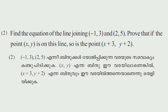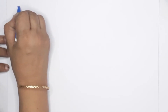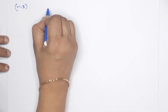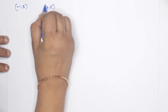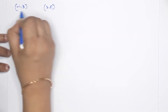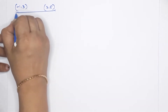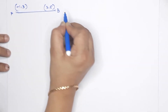Find the equation of the line joining negative 1, 3 and 2, 5. Prove that if the point (x, y) is on the line, so is the point (x+3, y+2). Negative 1, 3 is going to be point A; 2, 5 is going to be point B. This line is going to join A, B.